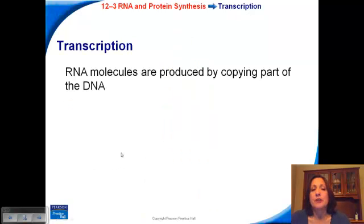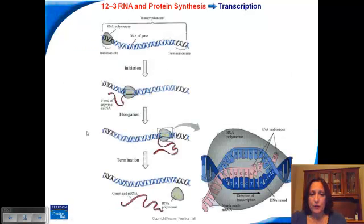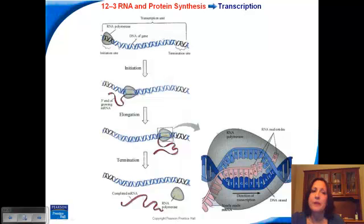In the process of transcription, RNA molecules are made by copying a part of the DNA. We need a specific enzyme — if you remember, when we build DNA we use DNA polymerase; here we're going to use RNA polymerase. So here we have a section of DNA, and within this long strand there's a gene. We're looking at that specific gene, and we want to make a copy of it because it codes for the proteins. RNA polymerase binds to the gene and slides along the DNA, making a copy of the messenger RNA.